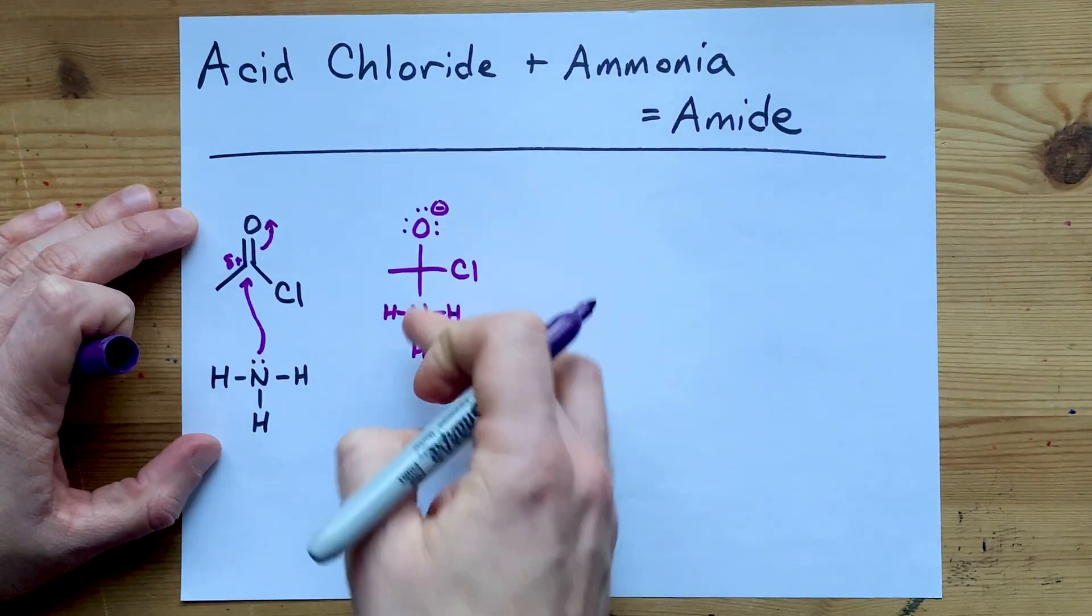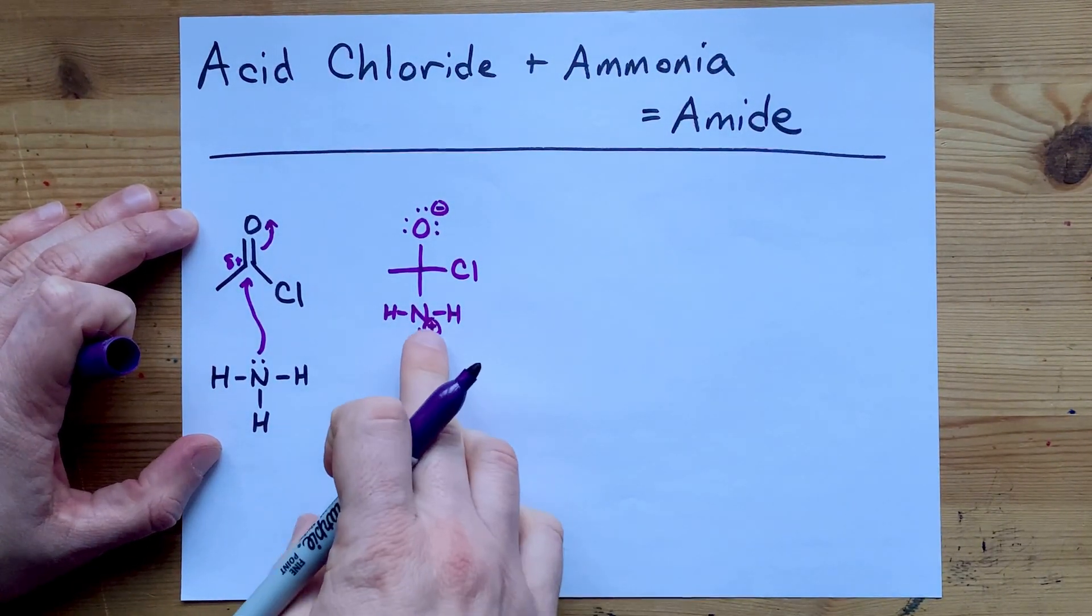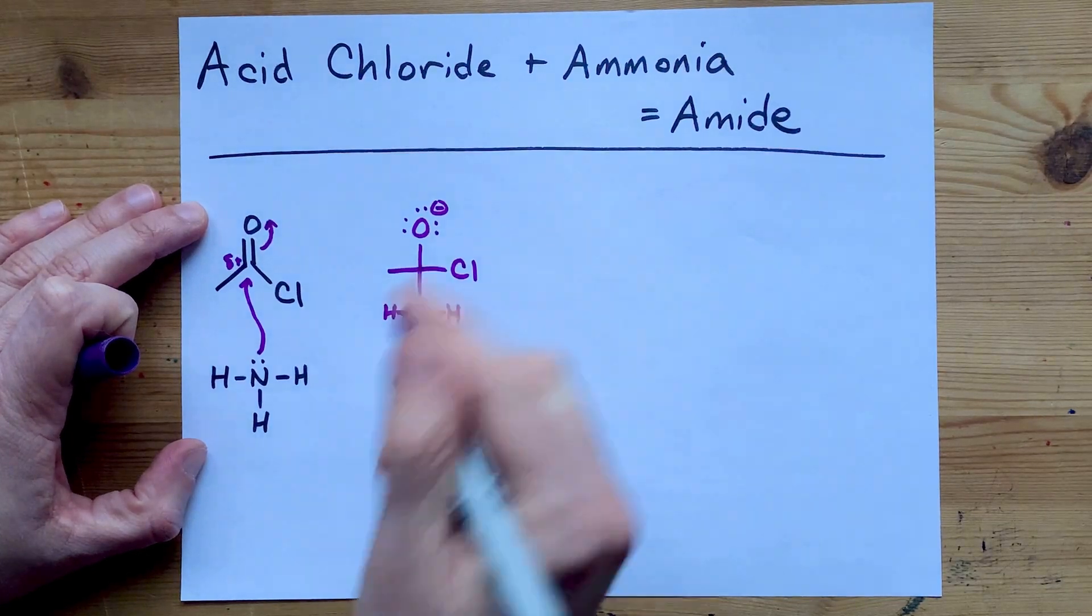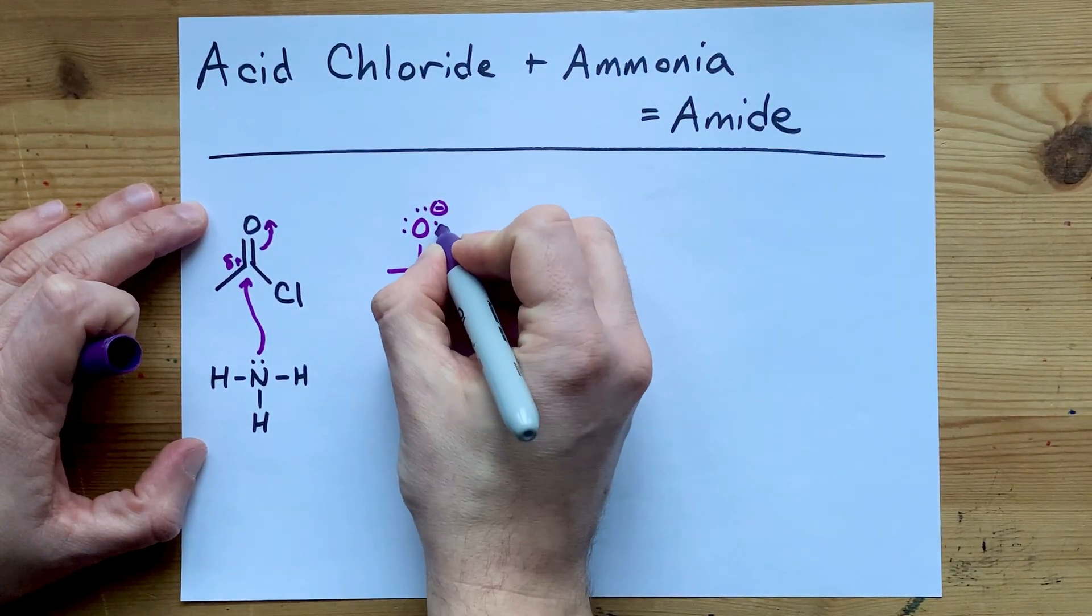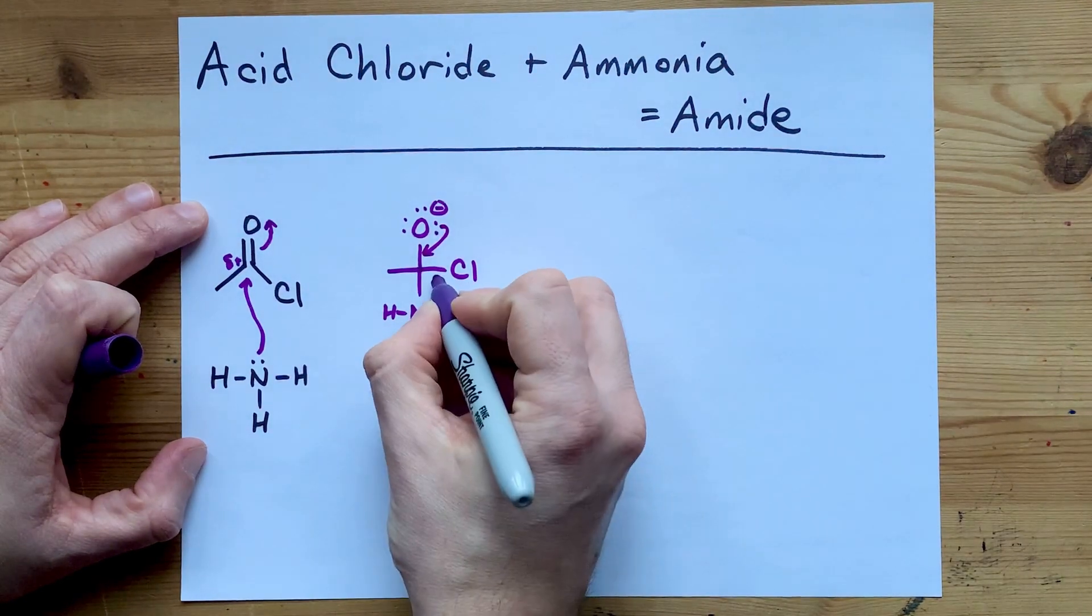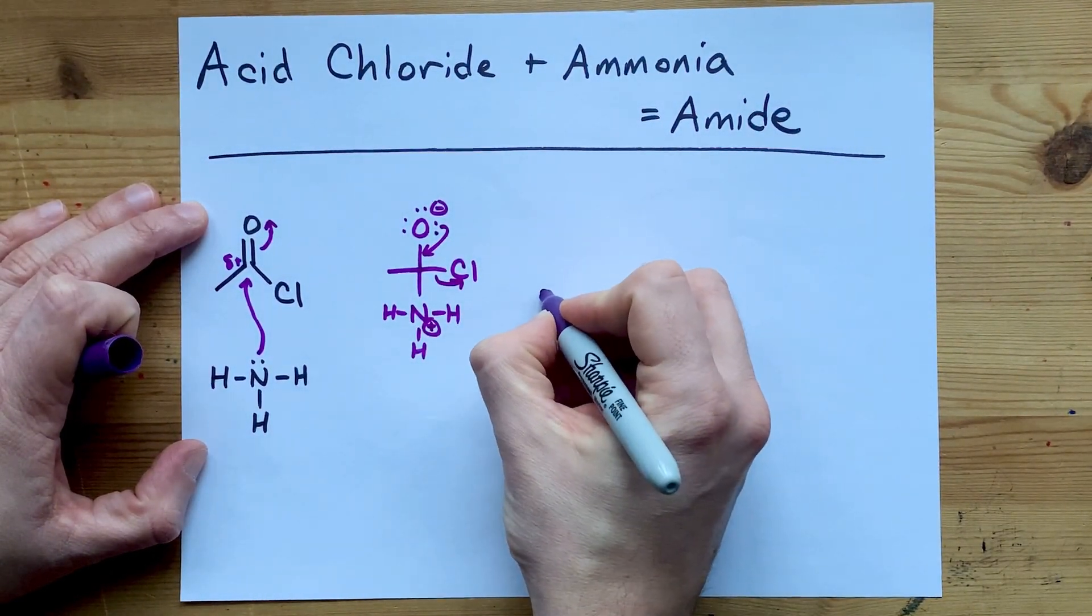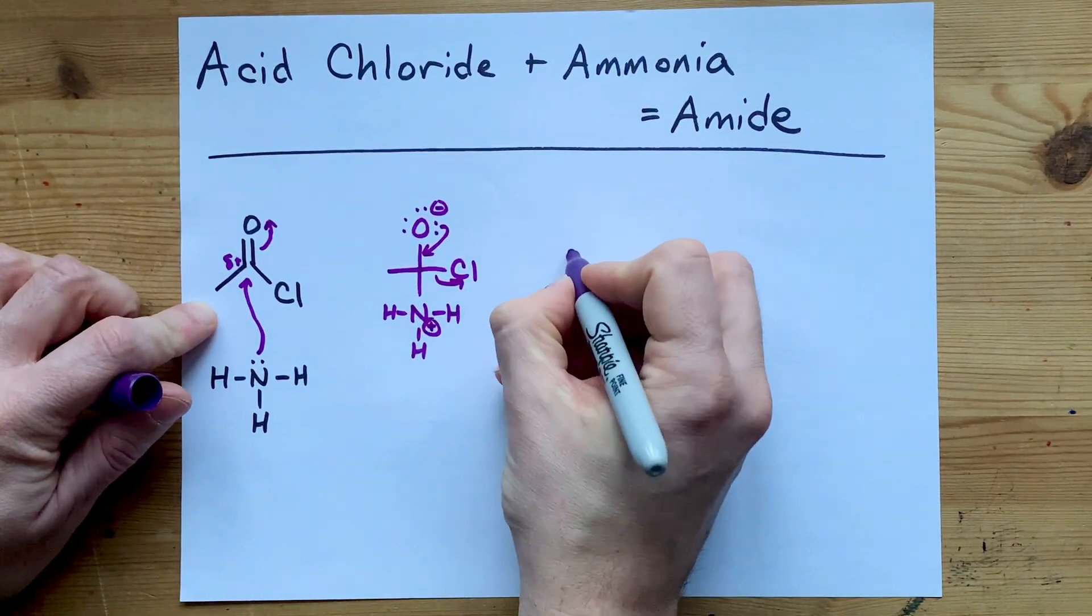You end up with this—kind of looks like a zwitterion with a plus charge on one side and minus charge on the other. At that point, the lone pair from oxygen tries to reform the double bond, and chloride is the thing to leave. So you have the carbon chain that was on the left, a double bonded oxygen,